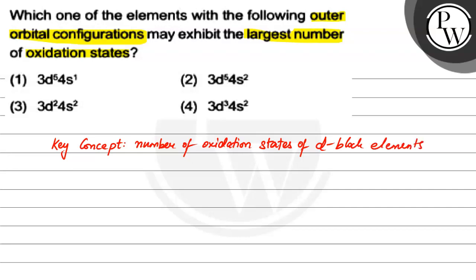This basically says that the number of oxidation states is actually equal to the number of unpaired d-orbital electrons, or number of electrons in the s orbital.